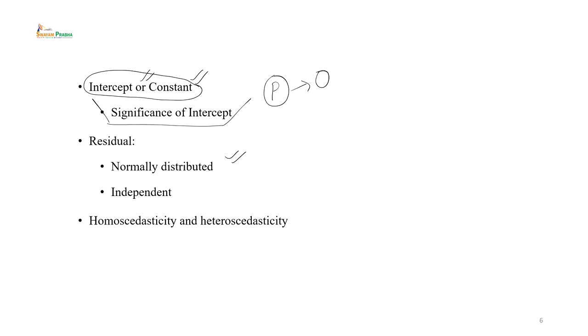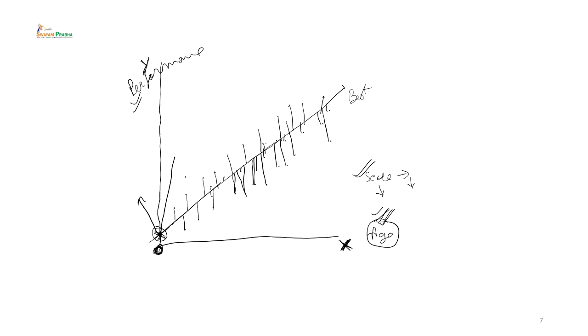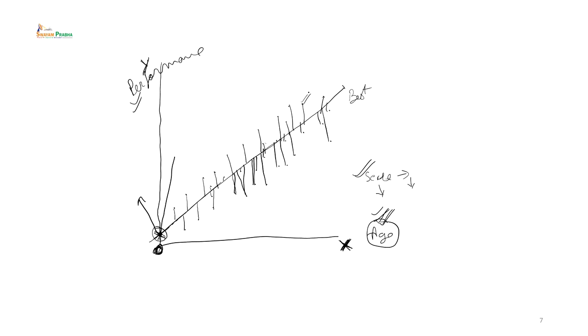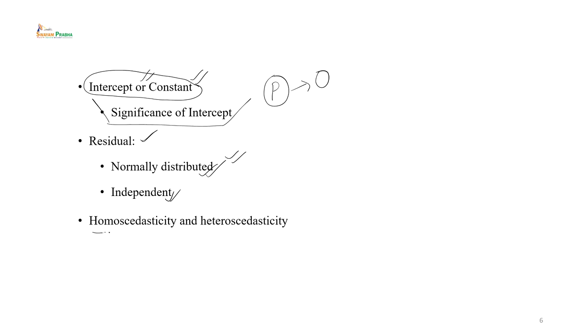अगला discussion point है residual कैसी होनी चाहिए — normally distributed और independent। जो हमारी residuals हैं यदि वो normally distributed न हों तो इससे regression के assumptions का उल्लंघन होता है। normally distributed residuals का अर्थ है कि residuals मेरी regression line के surrounding में normally distribute हों। normally distribution की characteristics हम लोगों ने last के lectures में detail में discuss किया था।